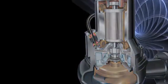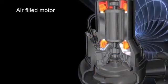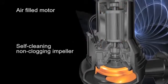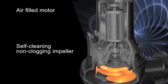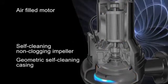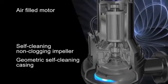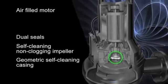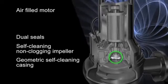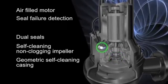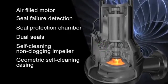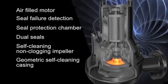From top to bottom, the IMPACT pump is built to get the job done. The air-filled motor improves the pump's overall efficiency. The self-cleaning non-clogging impeller ensures long life and greater reliability. A unique geometric self-cleaning casing design reduces the risk of clogging. Dual mechanical hard-faced seals have a longer life. A float sensing device in the oil chamber detects seal failure. A uniquely designed seal chamber protects the outer mechanical seal from damaging debris.